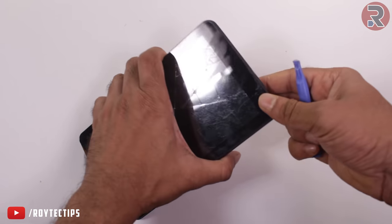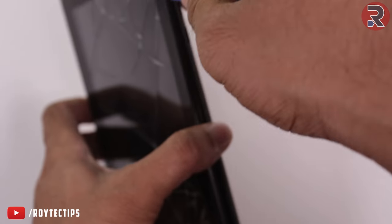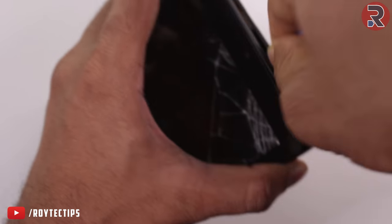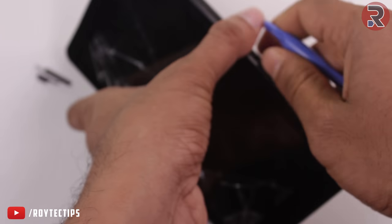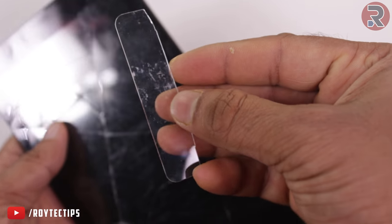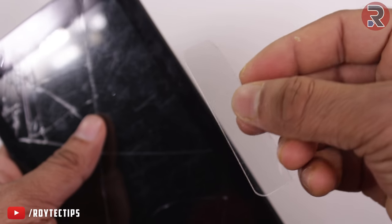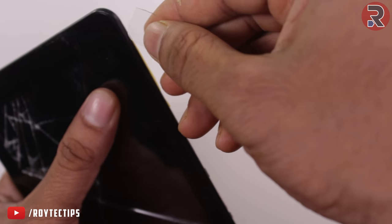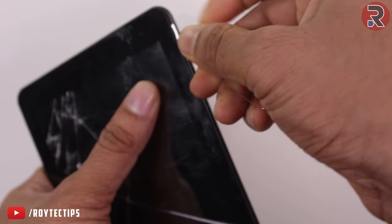First we're going to remove the back cover of the tablet. For removing the cover we're going to use a pry tool and insert the pry tool to remove the back cover. Here is the power on-off button.